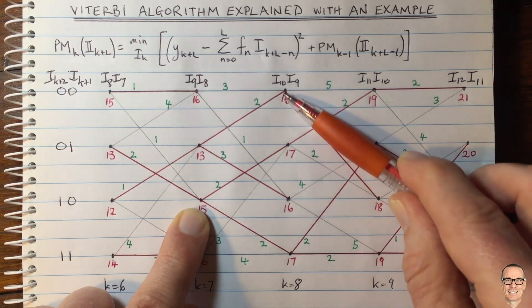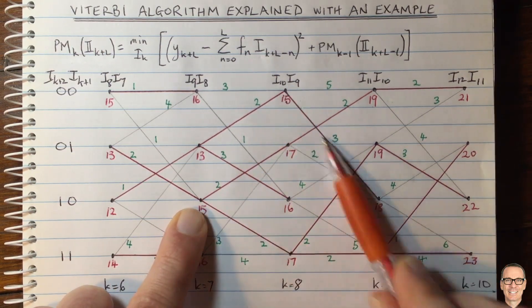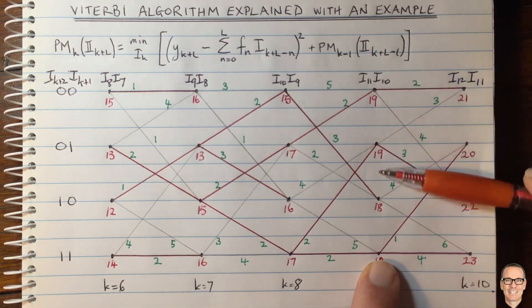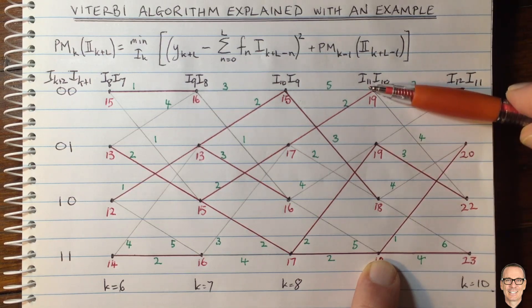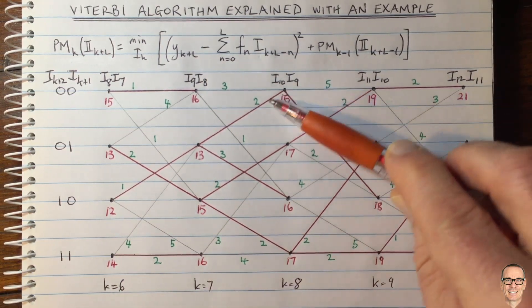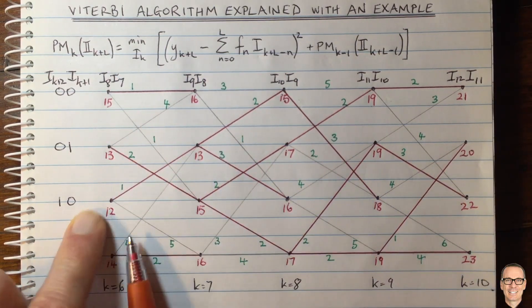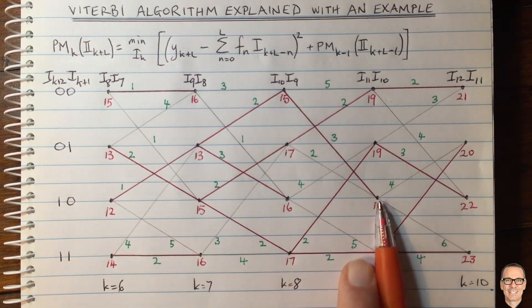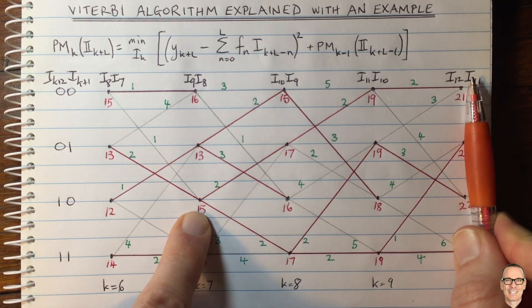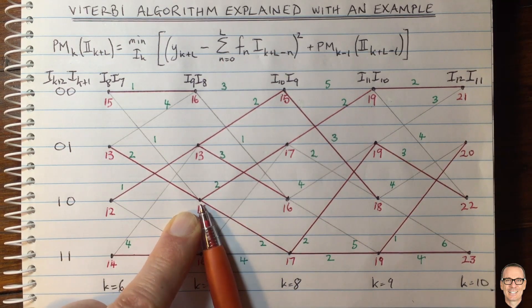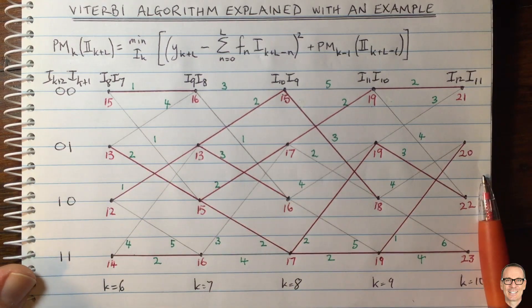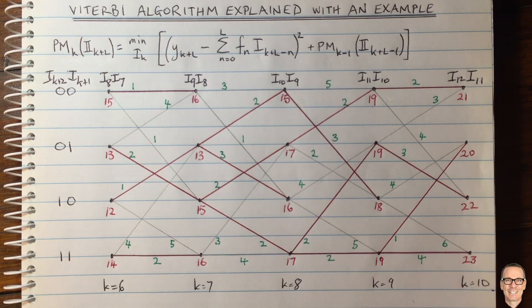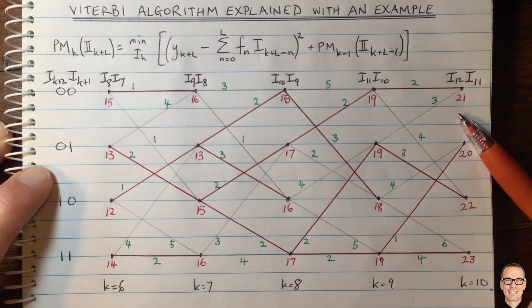Once paths merge, you can declare a winner. At k equals 9 we didn't yet see full merging since one path didn't go through the common node. But at time k equals 10, we do see a merging of all paths, so we can start making decisions even before reaching the end of the entire data sequence — which is one of the real advantages of the Viterbi algorithm. If this video has helped you understand the Viterbi algorithm, please give it a thumbs up, check out the description below for a fully categorized listing of all videos on the channel, and subscribe for more videos.